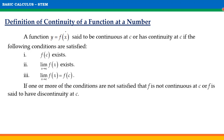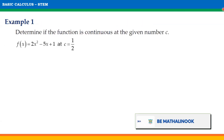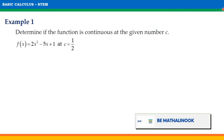If one or more of the conditions are not satisfied, then f is not continuous at C, or f is said to have discontinuity at C. Let us take some examples in determining if a function is continuous at a number.